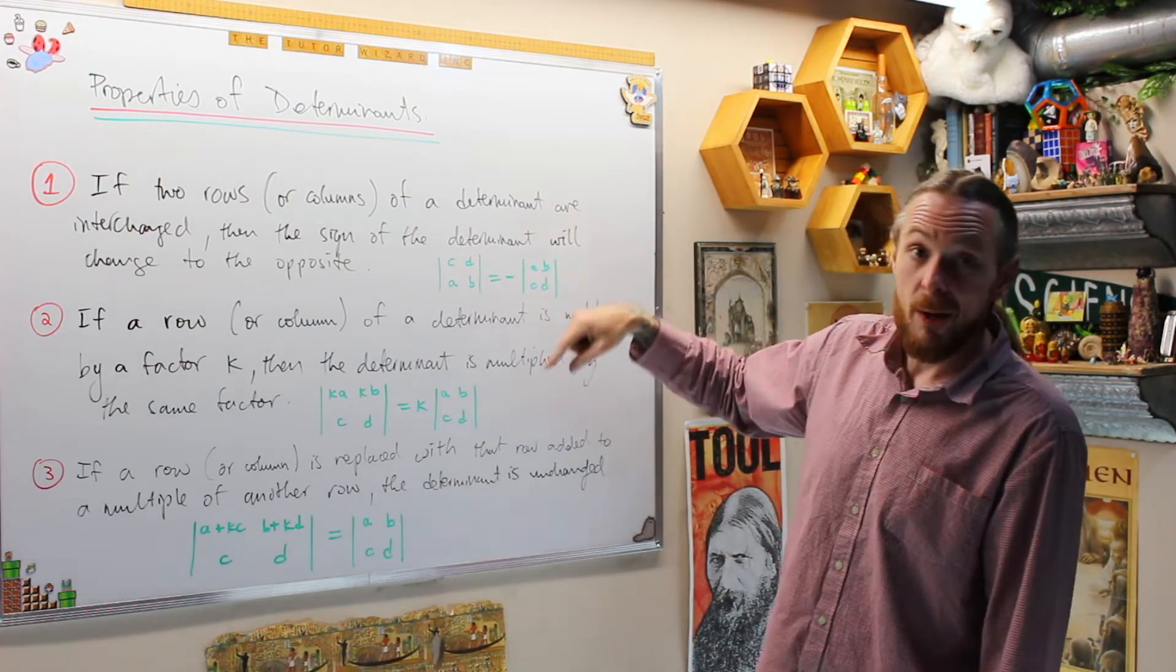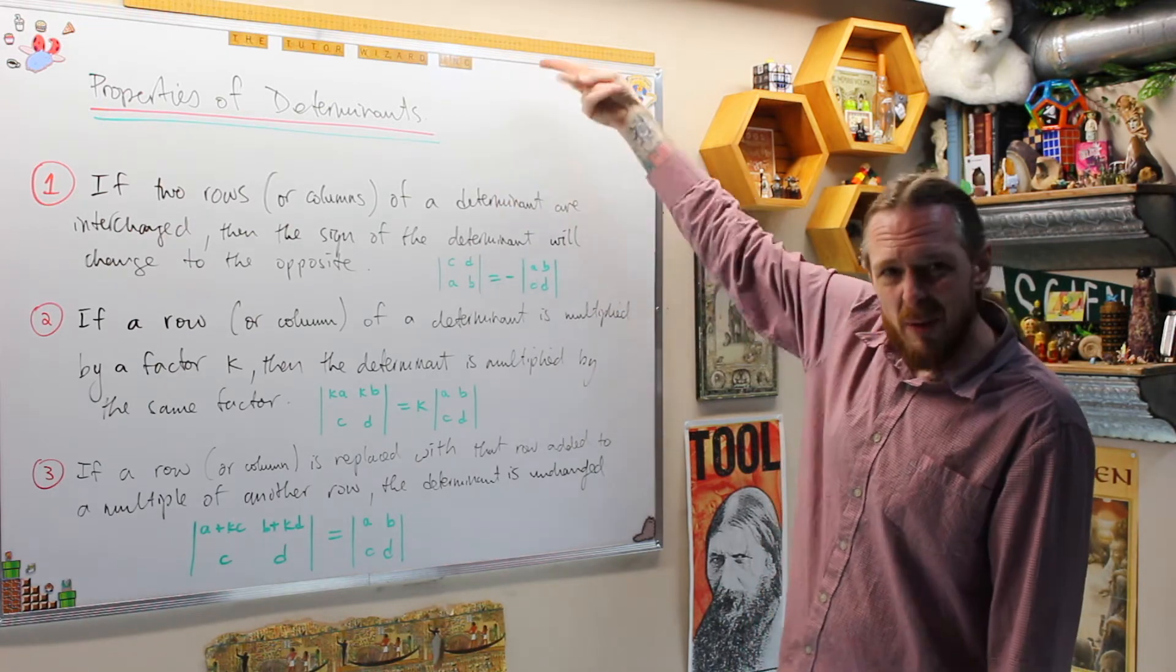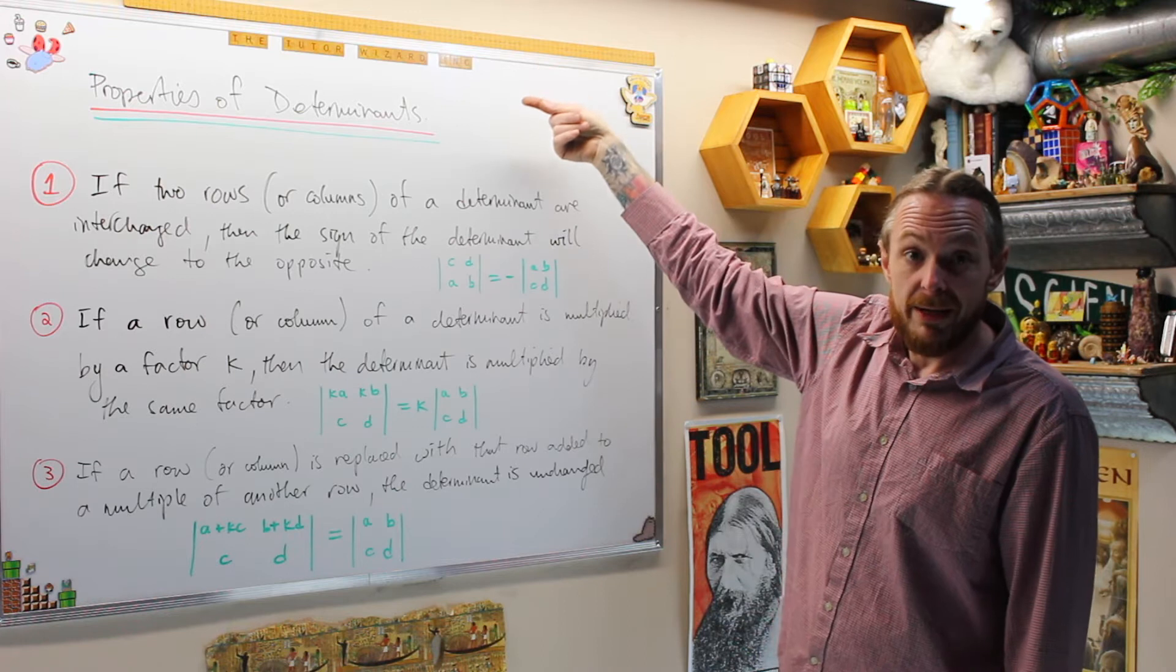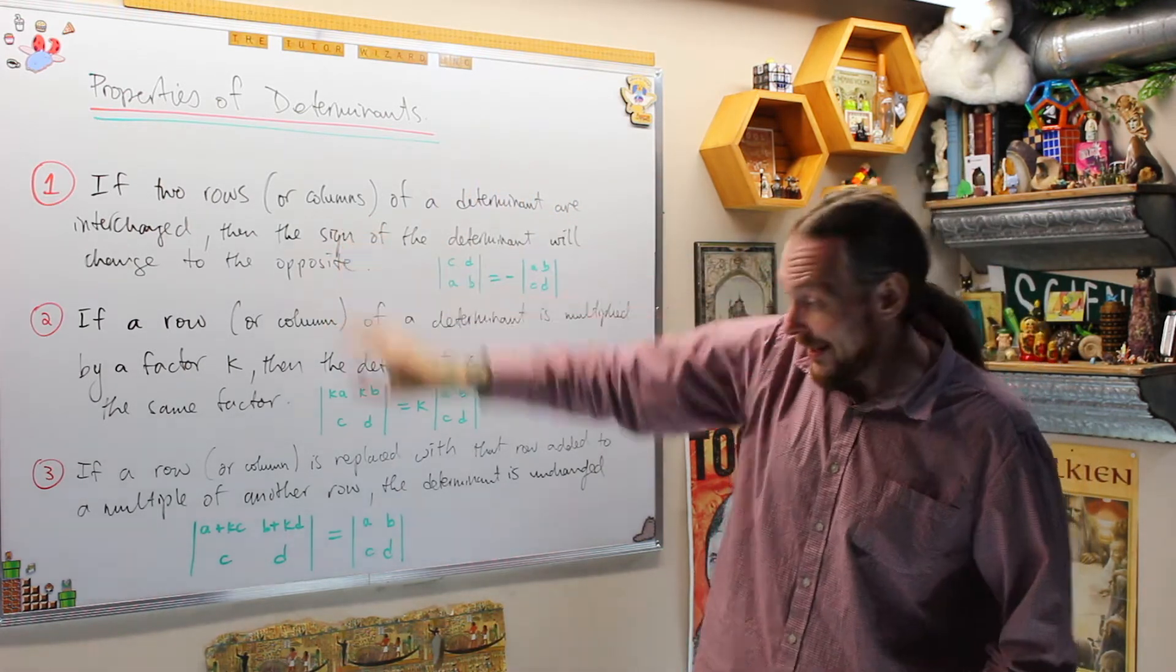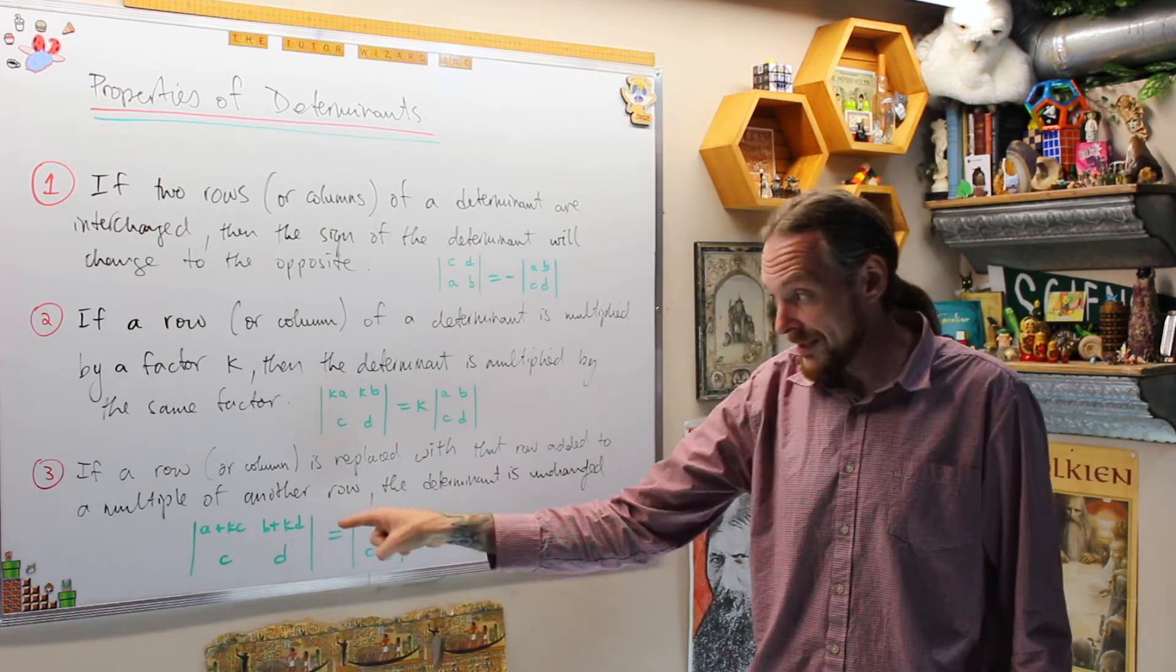The only time I would do that is I want a leading one on the top left corner. If I don't have one and I can see one, I'll probably interchange it so I get a leading one. I'll get a negative, and then I won't use these properties. I'm just going to use this one to eliminate below, and this doesn't change the determinant, so this will be safe.